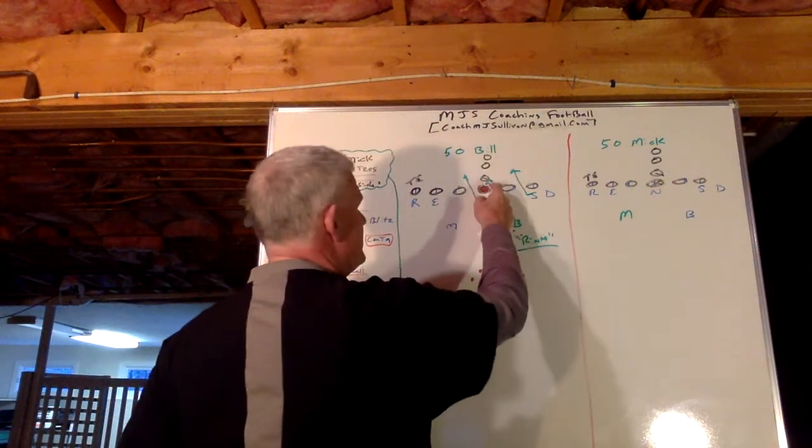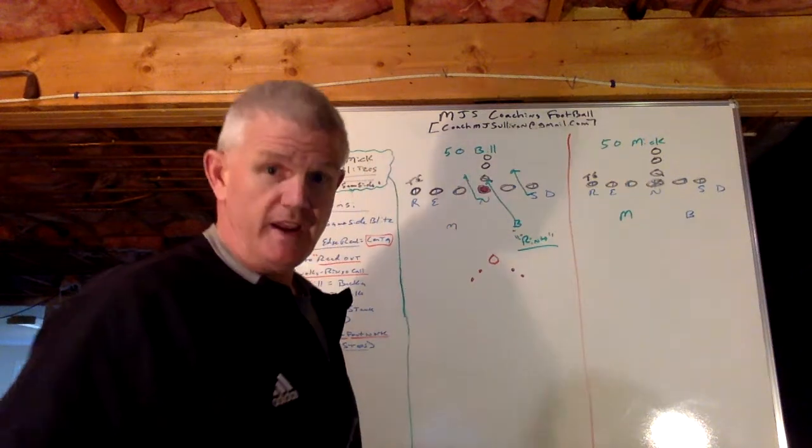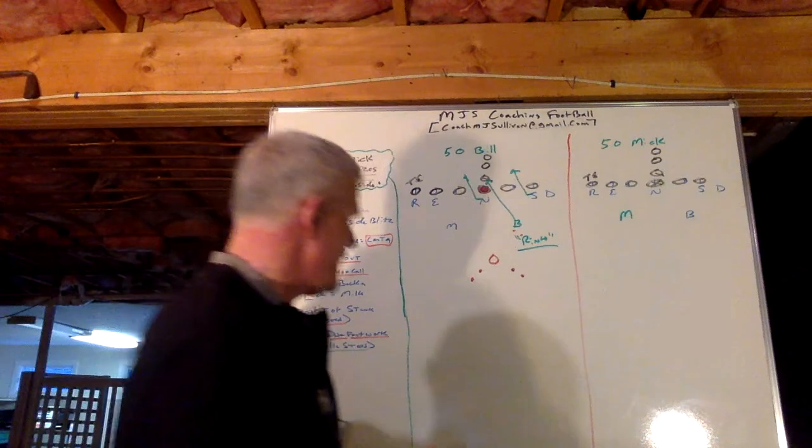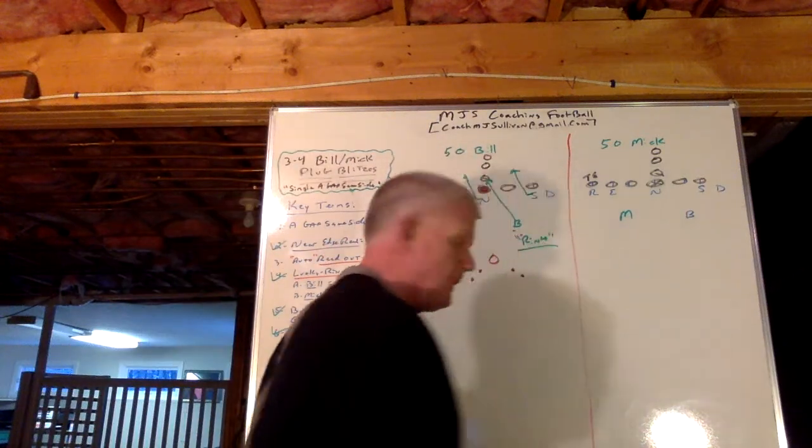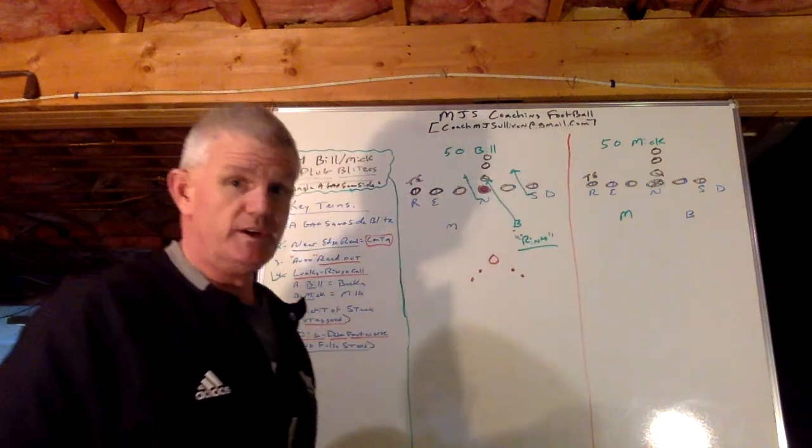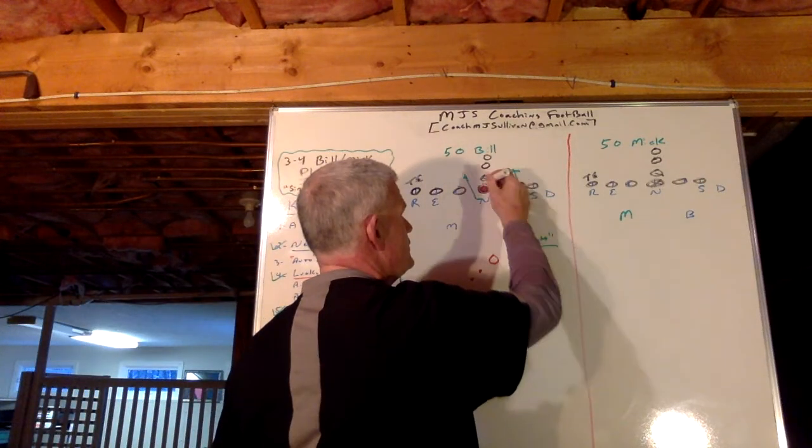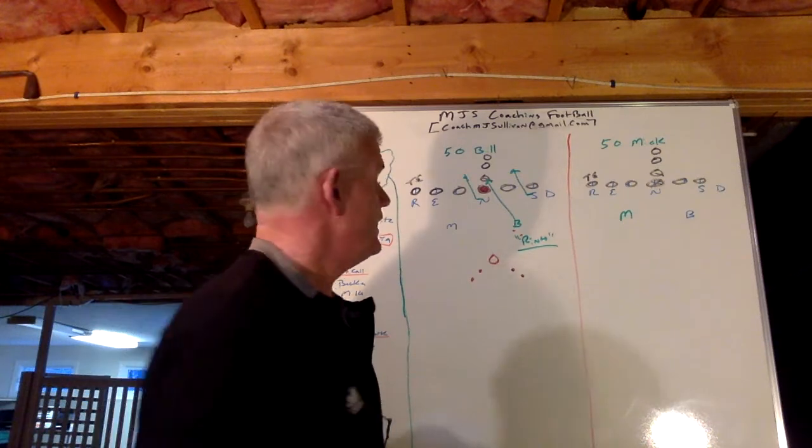So, the aiming point is the near edge of the center. A gap. Near edge. That's it. Near edge. So, then what happens is this. We teach the kids. The near edge is going to do one of two things. It's going to come toward you. It's going to go away from you.